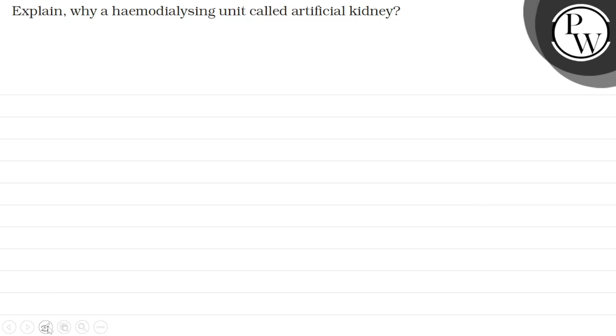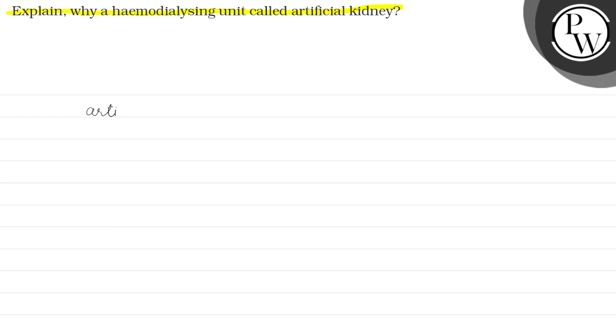Let's see the question here. The question is: explain why the haemodialysis unit is called the artificial kidney. We are asked what the haemodialysis unit is called — artificial kidney. How does it work? Dialysis.